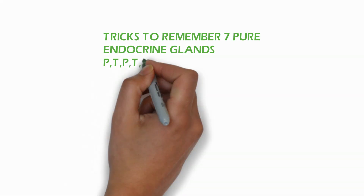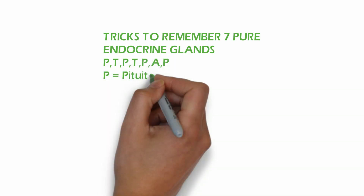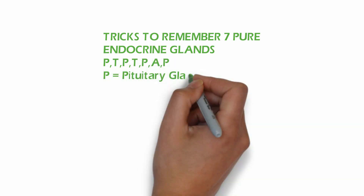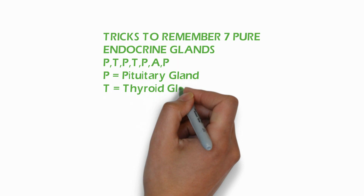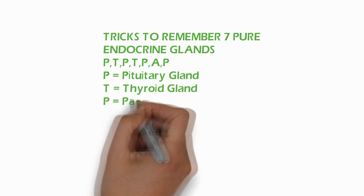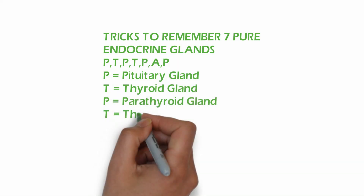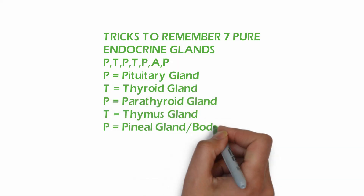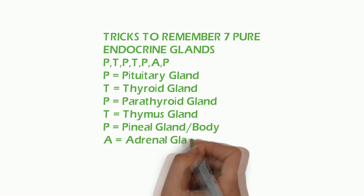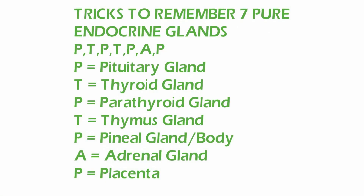Now tricks to remember 7 pure endocrine glands: P for pituitary gland, T for thyroid gland, T for parathyroid gland, T for thymus gland, P for pineal body, A for adrenal, and P for placenta.